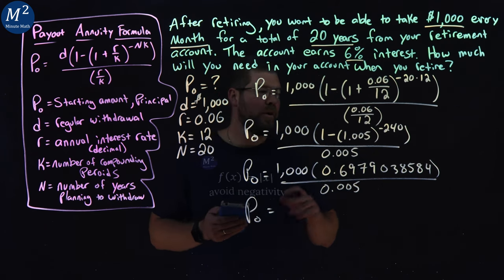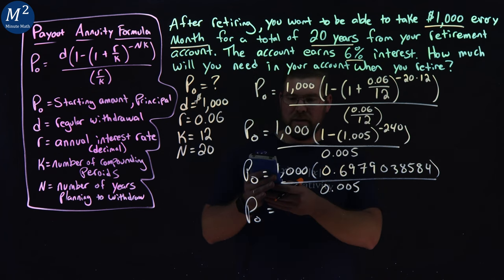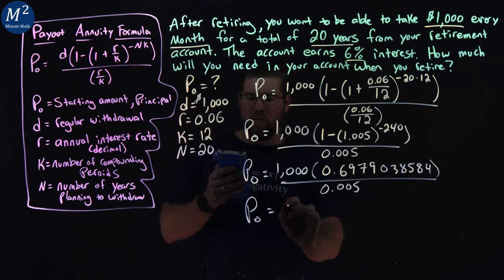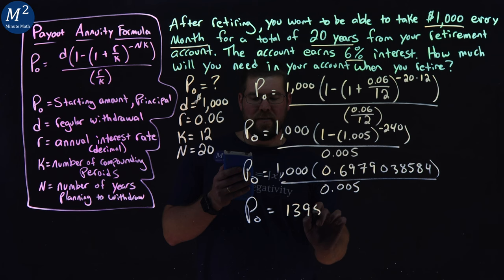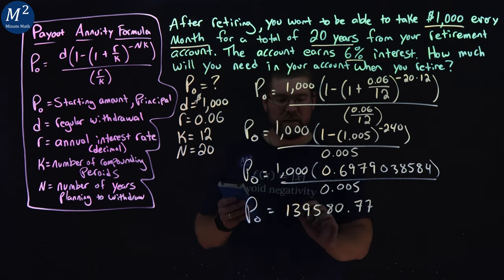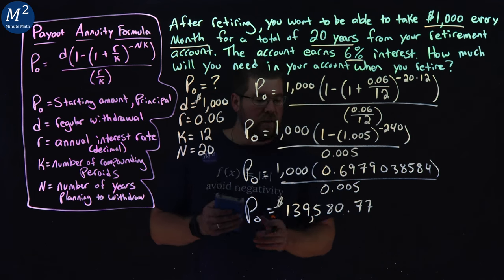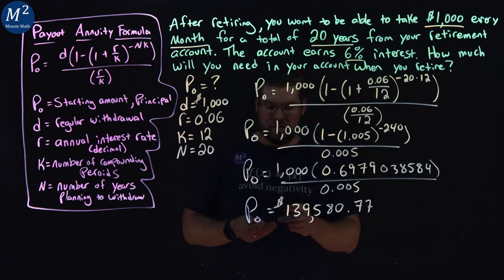Now I think at this point we can do all in one last step. We're going to take that number here, that long decimal. I'm going to multiply it by 1,000 and divide by 0.005. And I get 139,580.77 rounded. And that is $139,580.77.